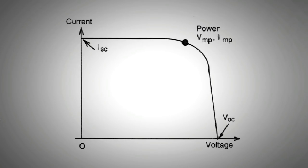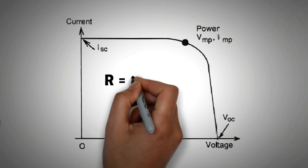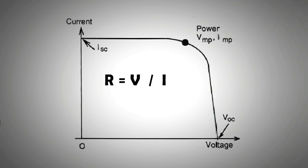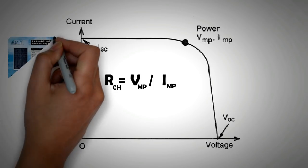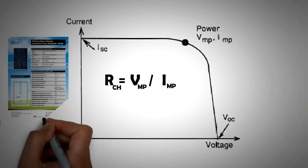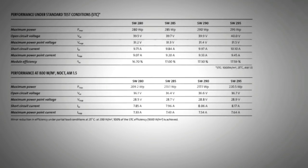The characteristic resistance of the solar panel can be roughly found out by simply dividing the maximum power voltage value with the maximum power current value. They are denoted by VMP and IMP respectively. Both of these values can be found on the specification sheet of the panel.